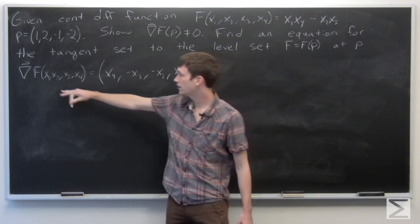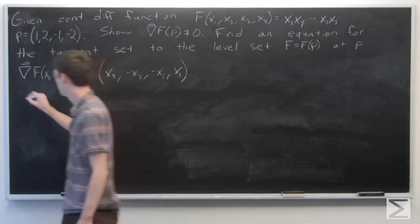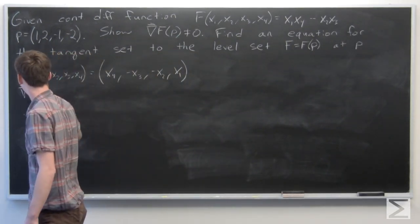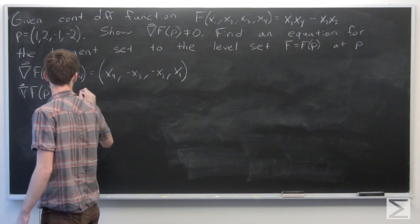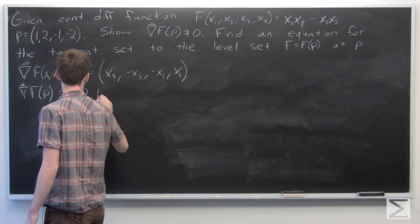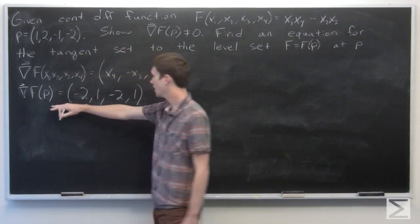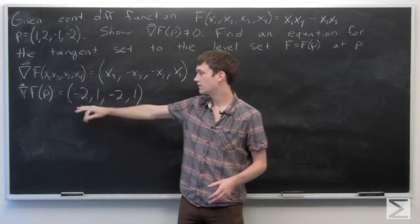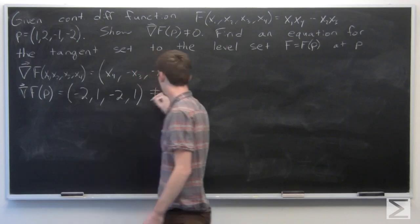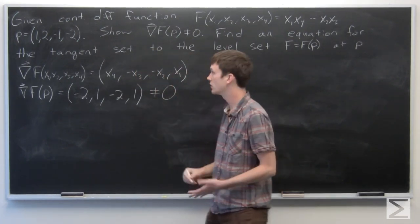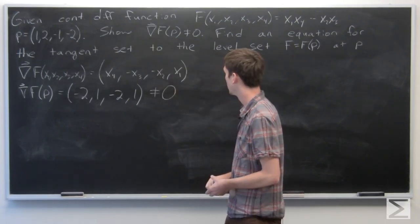So we get the following gradient vector, and we want to calculate it at the point p. We'll just plug in our values for p, and we get the vector (-2, 1, -2, 1), which doesn't equal the zero vector. So that shows that the gradient vector of f at p does not equal zero.